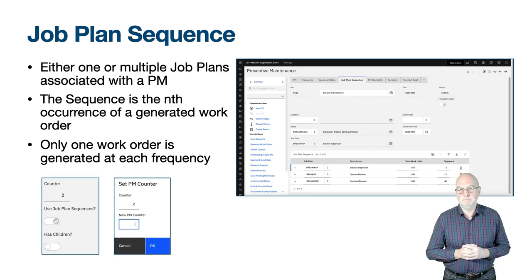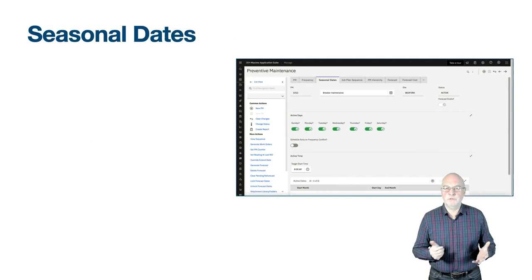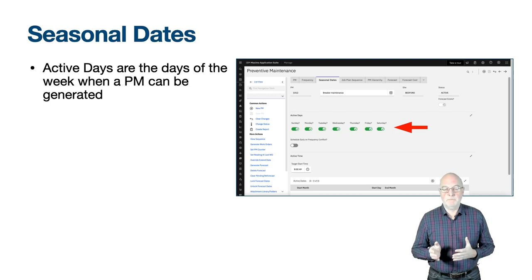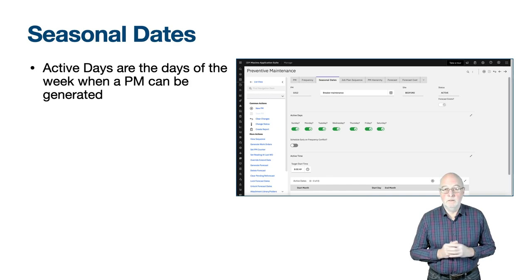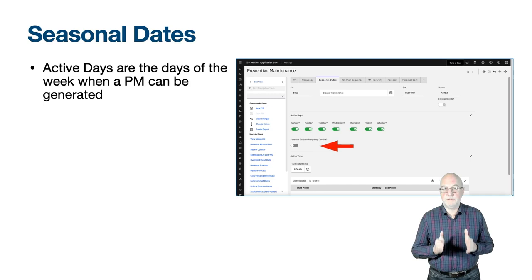Before generating work orders, consider when they can be generated. The seasonal dates tab: the active days are the days of the week on which you are happy for a work order to be generated. For a 24x7 operation any day would be selected. If you normally only work Monday to Friday, deselect Saturday and Sunday. If a work order falls due on a Saturday or Sunday, the target start date will move to the following Monday — unless 'schedule early on frequency conflict' is set, in which case it will be Friday.